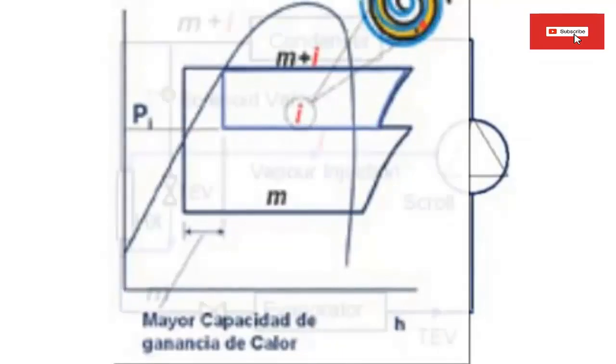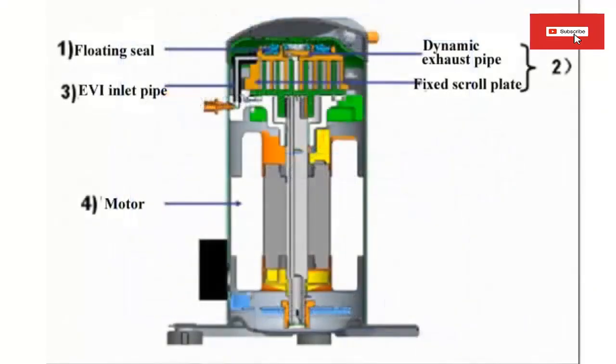10. The cycle efficiency of the scroll compressor with vapor injection is greater than that of a conventional single-stage scroll compressor, delivering the same capacity because the additional subcooling capacity is achieved with less energy.